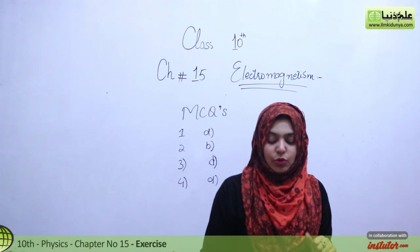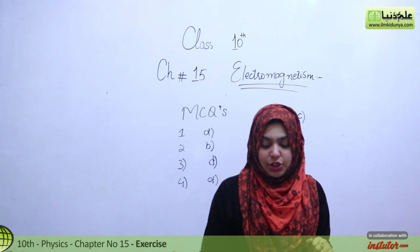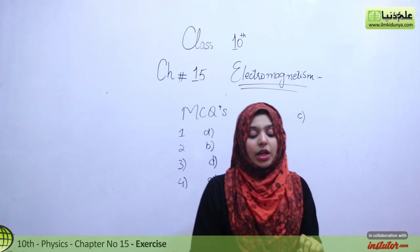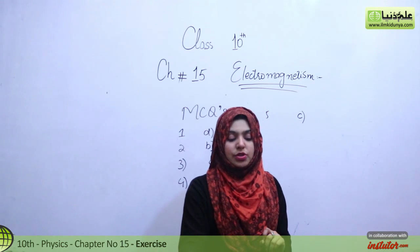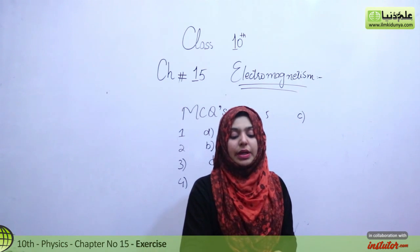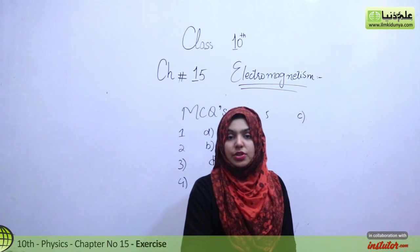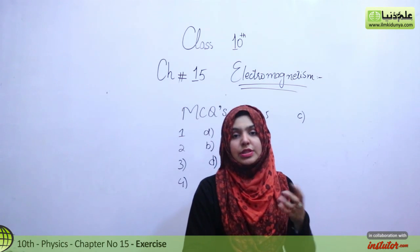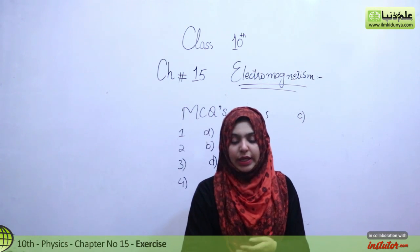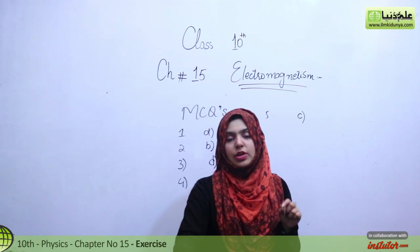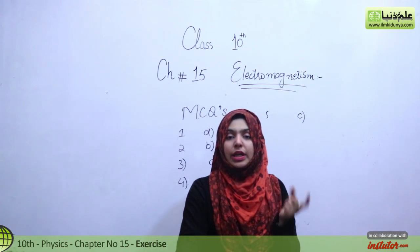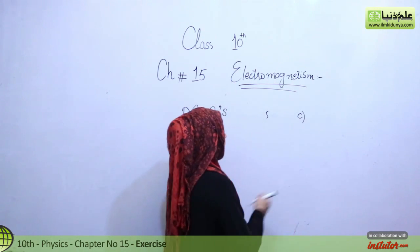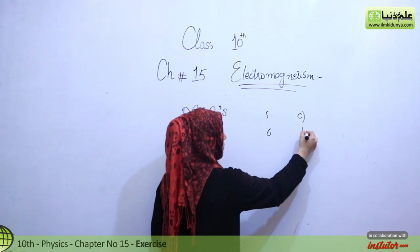Number 6 is: which part of the DC motor reverses the direction of the current through the coil every half cycle? Number A the armature, number B the commutator, number C brushes, number D slip rings. The commutator — basically the split rings with the carbon brushes — is the structure that reverses the current direction. So number B, the commutator, is the right option.